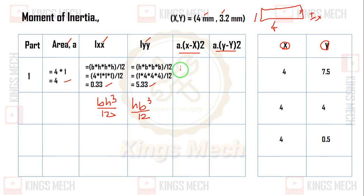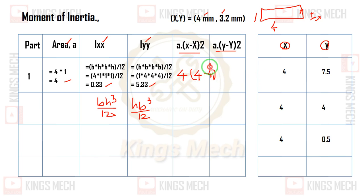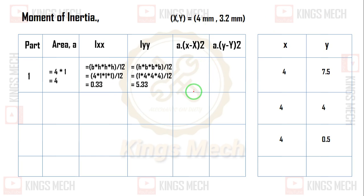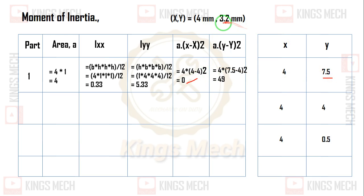After that, the value of area is 4. Small x value is 4, capital X value is 4, so a·(x − X)² = 4·(4 − 4)² = 0. The area value is 4, small y value is 7.5, capital Y value is 3.2. So a·(y − Y)² = 4·(7.5 − 3.2)² which we calculate as 4 into 4.3 squared.